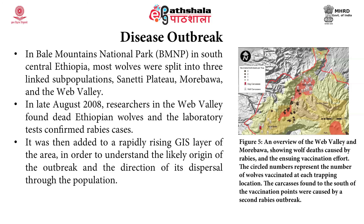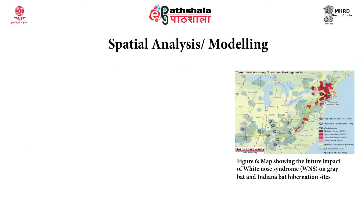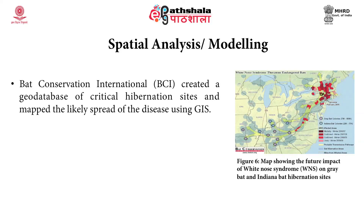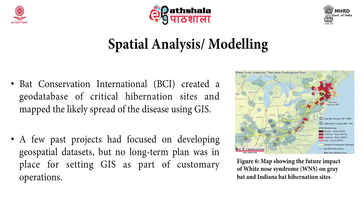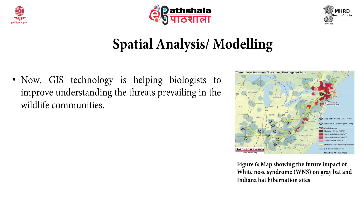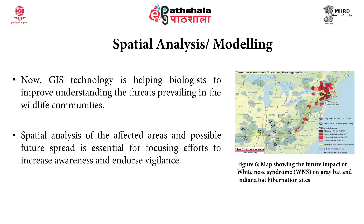The circle numbers in the figure represent the numbers of wolves that had been vaccinated at each trapping location. The carcasses found to the south of the vaccination points were caused by a second rabies outbreak. Another example is spatial analysis modeling showing the future impact of white-nose syndrome on bats and their hibernation sites. Bat Conservation International created a geodatabase of critical hibernation sites and mapped the likely spread of the disease using GIS. GIS technology is also helping biologists to improve the understanding of threats prevailing in wildlife communities, and spatial analysis of affected areas and possible future spread is essential for focusing efforts to increase awareness and endorse vigilance.